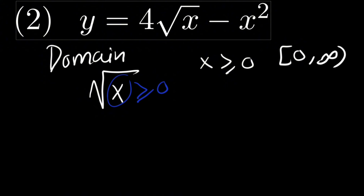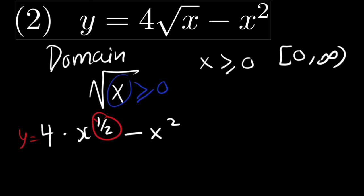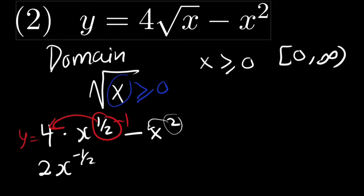To find the critical points, we will derive this function. This function can also be written as 4 times x to the power of one half, minus x squared. To derive this using the power rule, we take one half and multiply it to get 2x to the power of negative one half. Then we take the 2 and multiply to get 2x to the power of 1, writing the minus sign as it is. So this is the derived function.